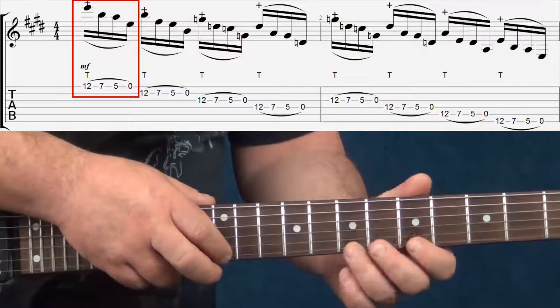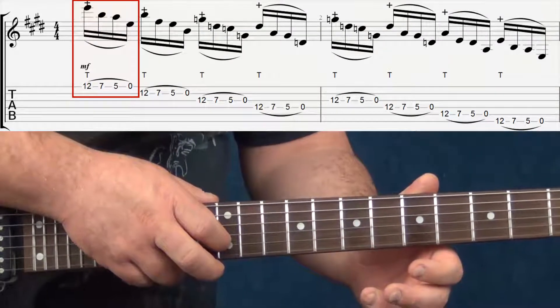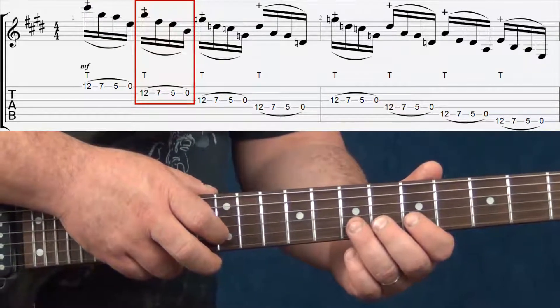Again, that's 12, 7, 5, 0. Now I'm going to repeat that on the next 3 strings.